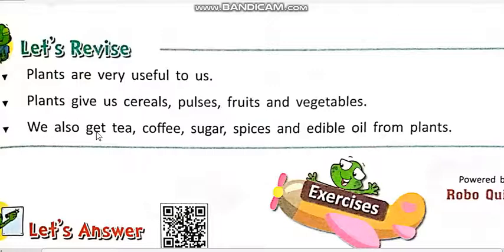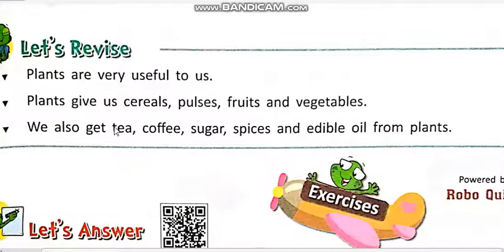We also get tea, coffee, sugar, spices and edible oil from plants. ہم plants سے tea، coffee، sugar، spices and edible oil حاصل کرتے ہیں.